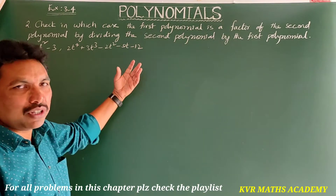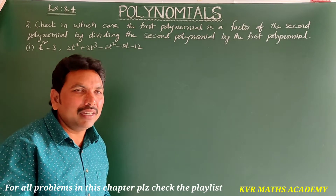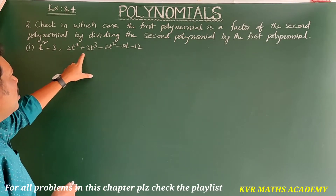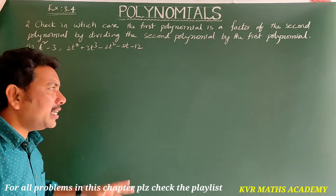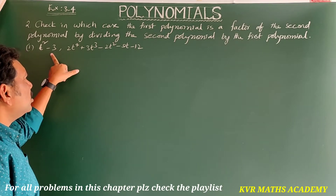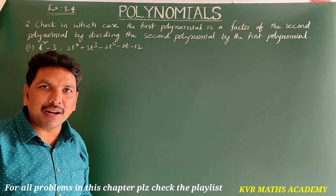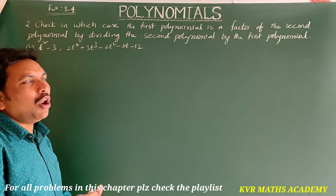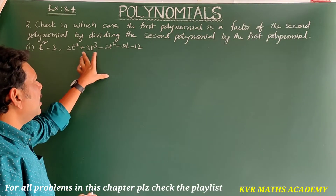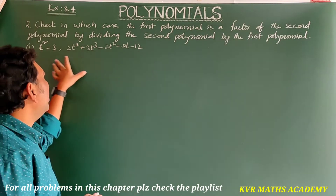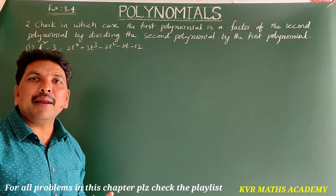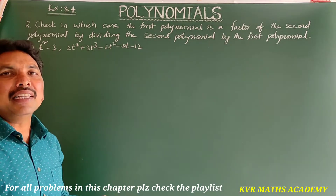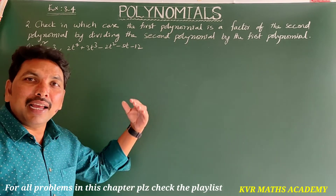First I will do the first one, then explain the remaining two. We have to divide the second polynomial by the first polynomial and check if the first polynomial is a factor of the second polynomial. If we divide the second polynomial by the first polynomial and get a remainder of 0, then the first polynomial is a factor of the second polynomial.